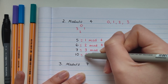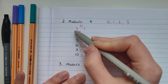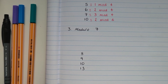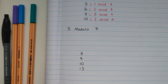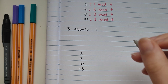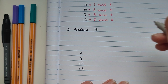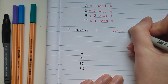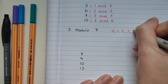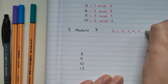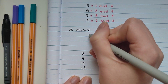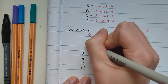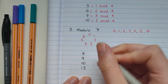Again, you can't get any answer that wasn't originally on our clock. One last example — let's try modulo 7. In this case, we've got 7 numbers on our clock: 0, 1, 2, 3, 4, 5, and 6. So on our clock we've got 0, 1, 2, 3, 4, 5, 6.